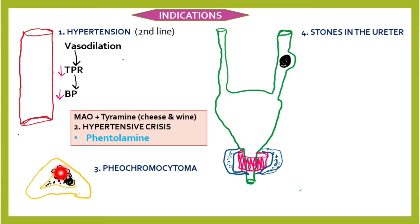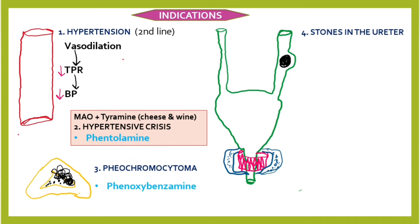The next indication is pheochromocytoma, which is a tumor of the adrenal medulla. The adrenal medulla normally produces catecholamines — about 80% epinephrine and 20% norepinephrine. With a tumor, there are increased catecholamine levels causing high blood pressure, headaches, sweating, increased heartbeat, and tremors. We can reduce symptoms with an alpha blocker — phentolamine is reversible, so consider phenoxybenzamine, which is irreversible.